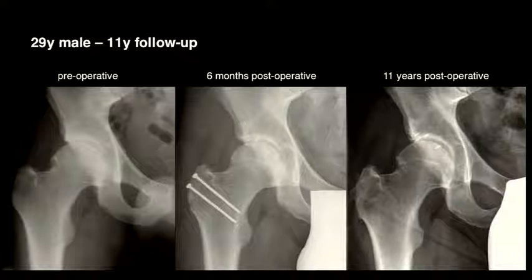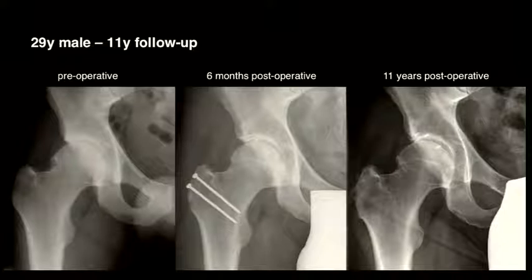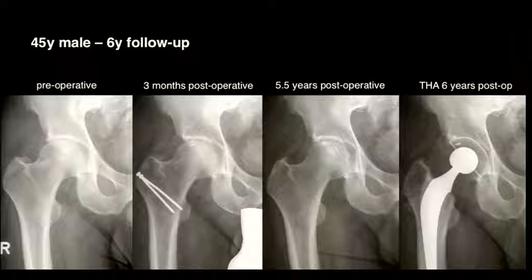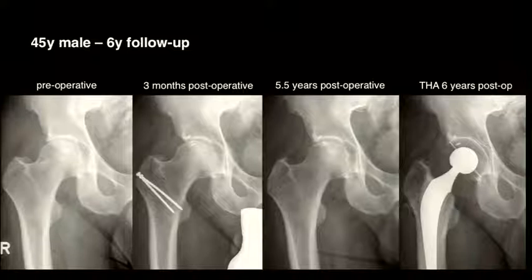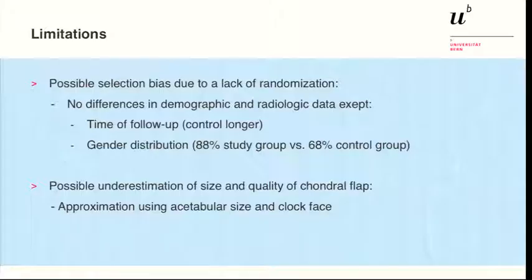One example is an 11-year follow-up after surgical hip dislocation with this treatment, showing a very good clinical result — a Merle d'Aubigné score of 18, which is excellent. We also had unfavorable results: one patient did well until five years postoperatively but then required total hip replacement at six years. This illustrates that outcomes can deteriorate suddenly after an initially good course.